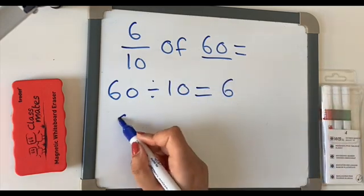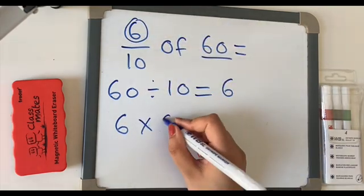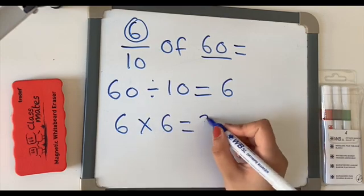60 divided by 10 is 6. And then we take our 6, we times it by our numerator, which is 6. 6 times 6 equals 36.